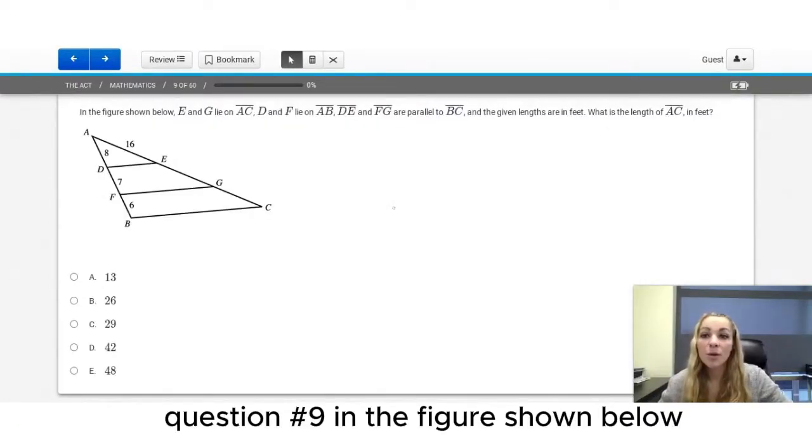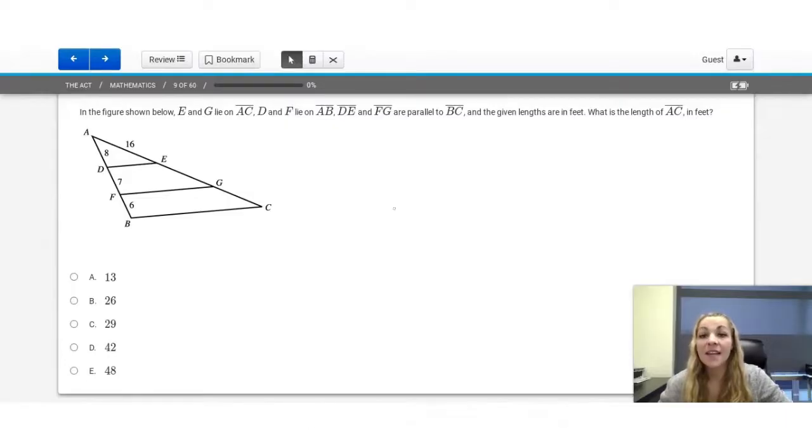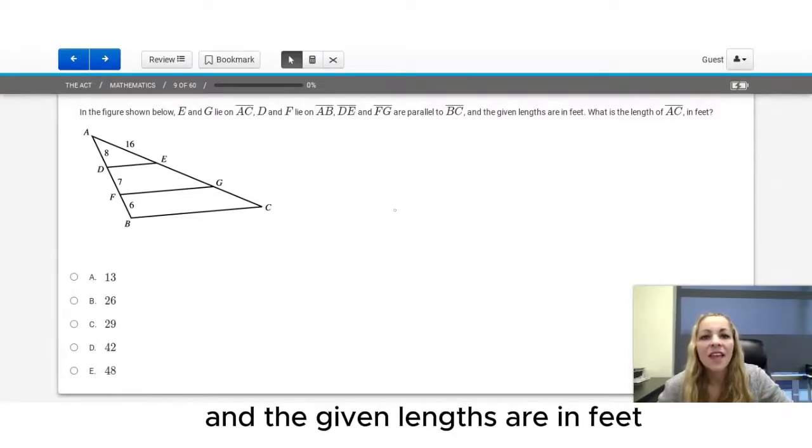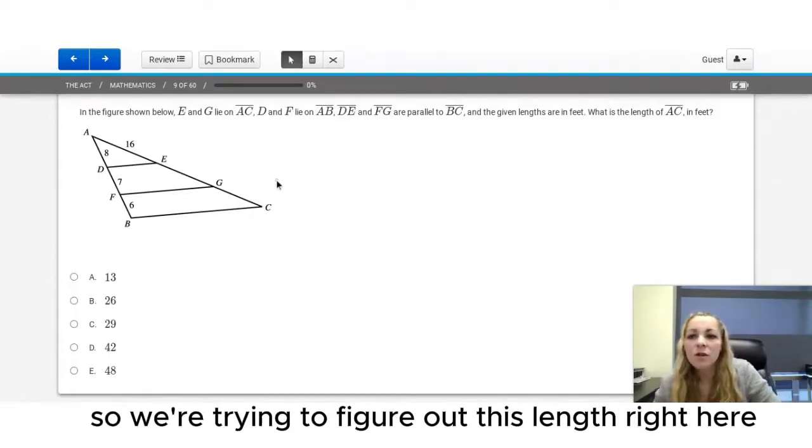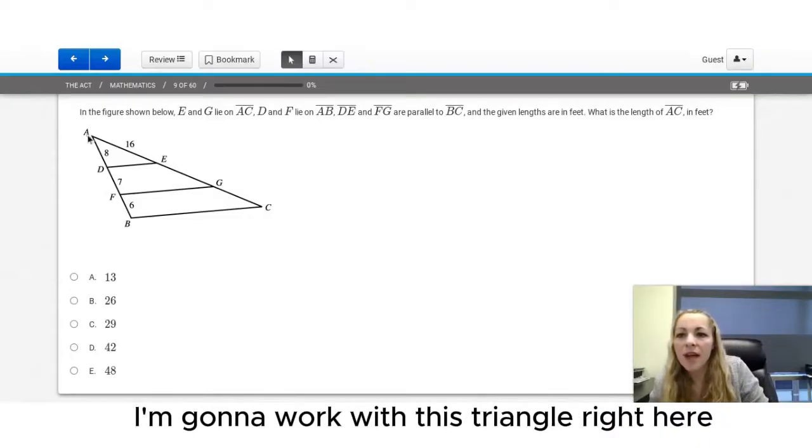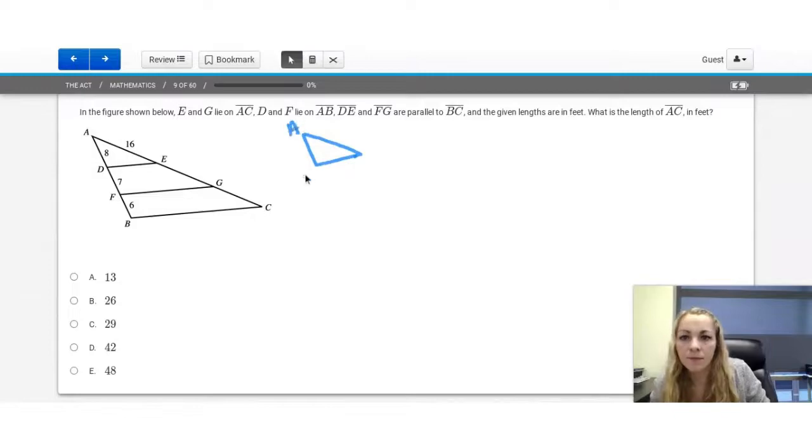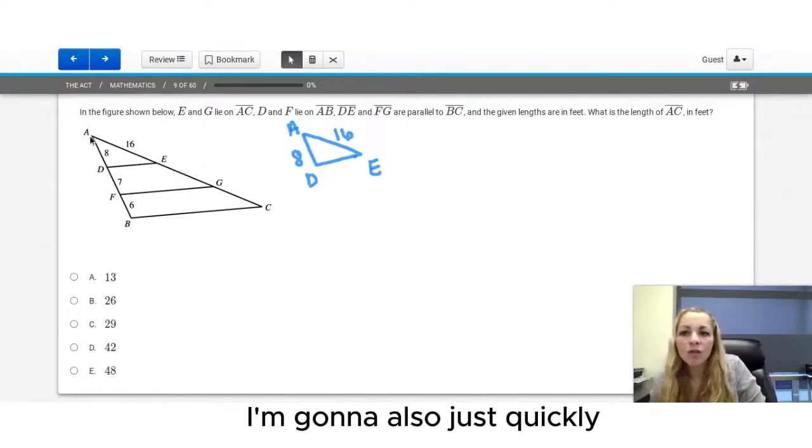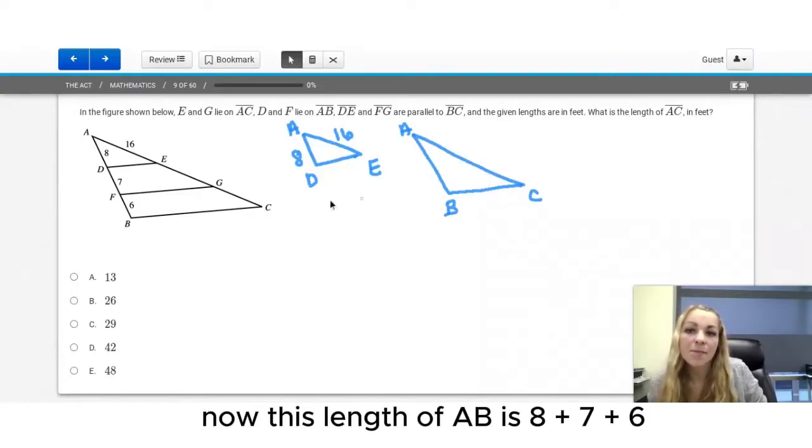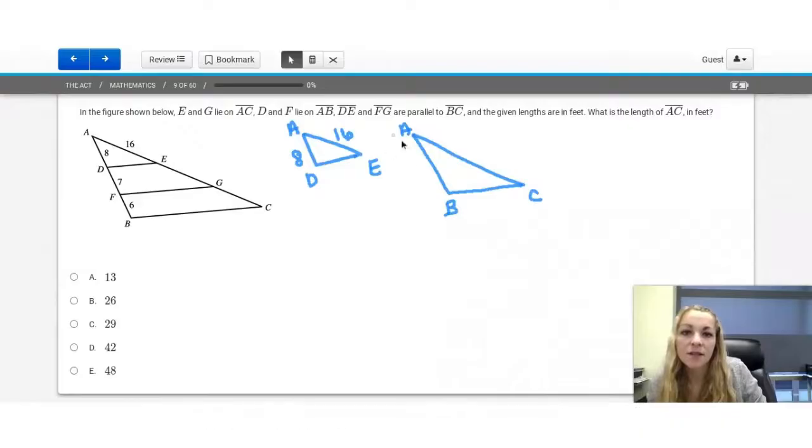Question number nine. In the figure shown below, E and G lie on AC. D and F lie on AB. DE and FG are parallel to BC, and the given lengths are in feet. What is the length of AC in feet? So we're trying to figure out this length right here. We have a bunch of similar triangles, but I'm going to work with two similar triangles. I'm going to work with this triangle right here. And since I'm trying to figure out AC, I'm going to also just quickly redraw this large triangle ABC.